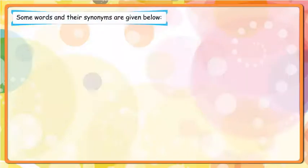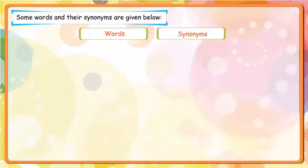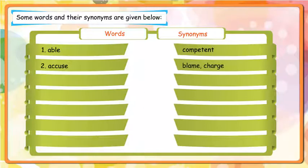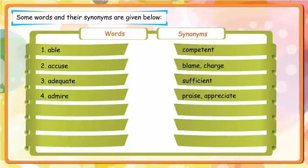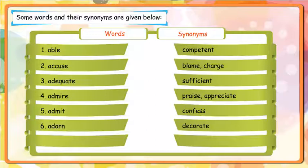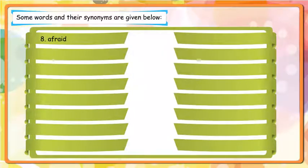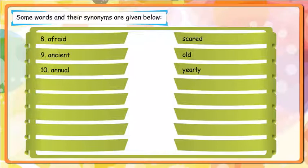Some words and their synonyms are given below. Words - Synonyms: Able - Competent; Accuse - Blame, Charge; Adequate - Sufficient; Admire - Praise, Appreciate; Admit - Confess; Adorn - Decorate; Affectionate - Loving, Fond; Afraid - Scared; Ancient - Old; Annual - Yearly.